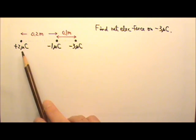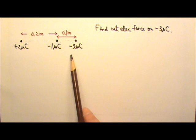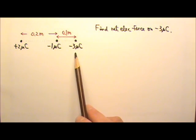Three-point charges are placed along a straight line. Find the magnitude and direction of the net electric force on the negative 3 µC charge.